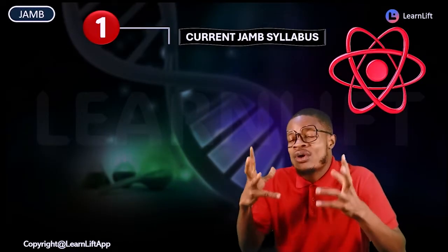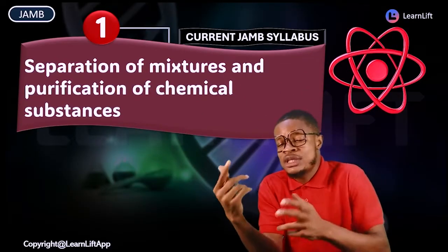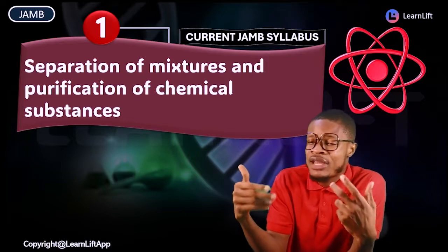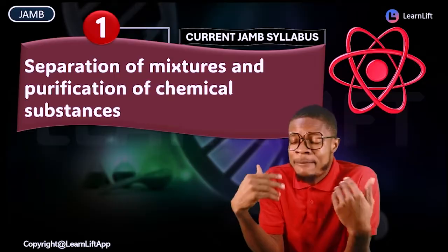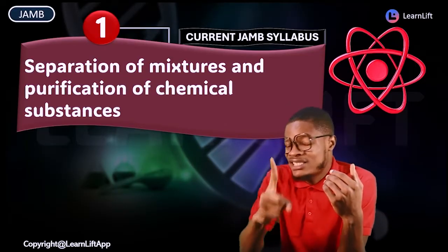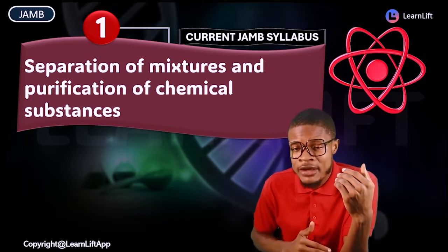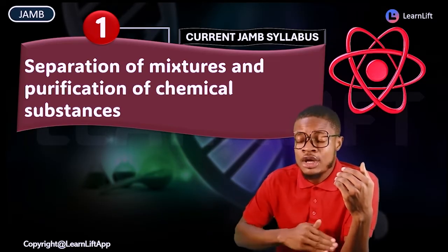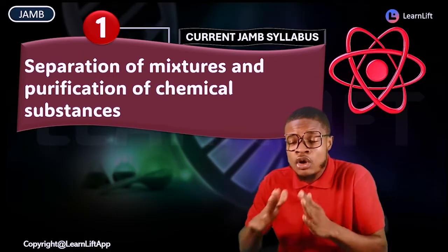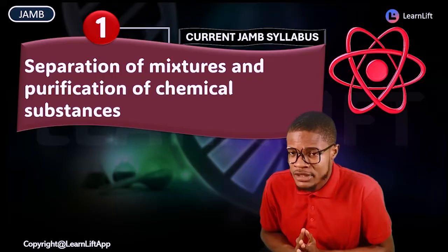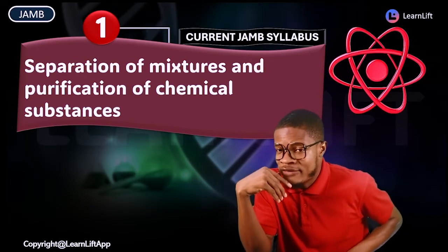Number one, under your current JAM syllabus, the first topic is separation of mixtures and purification of chemical substances. In this first chapter, there are five different aspects under it: pure and impure substances, melting and boiling point, elements, compounds and mixtures, and separation techniques. All of them together — five. And then we have a series of classes under just this chapter one that you have to know.